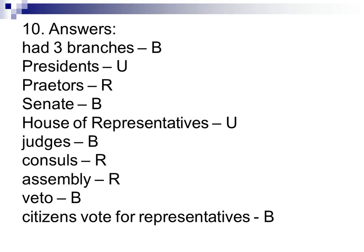Number 10: You had to tell whether each statement was true for the United States, Rome, or both. Both the U.S. and Rome had three branches. Presidents were only in the U.S.; Praetors were only in Rome. The Senate — both have it. The House of Representatives is just the United States. Judges is true for both. Consuls is true for the Romans. The Assembly is true for the Romans. Veto — both have that power. And citizens voting for representatives is true for both the Roman Republic and the United States.